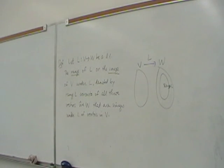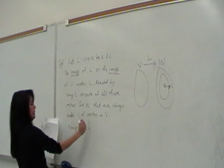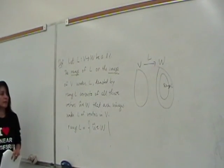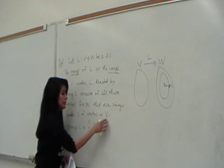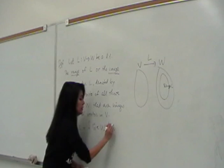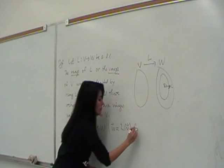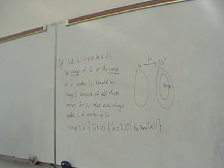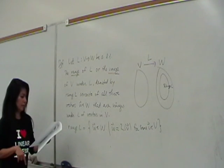For linear transformation. So how do we write this in symbols? Range L, how do we write this? It's a set of all W in W such that W is equal to L of V for some V in V. That's what it means. You can find some V in V. Does that mean can you find more than one? Yeah, it's okay. If your mapping is not one-to-one, you can have more than one V in V. So that's how you do it.